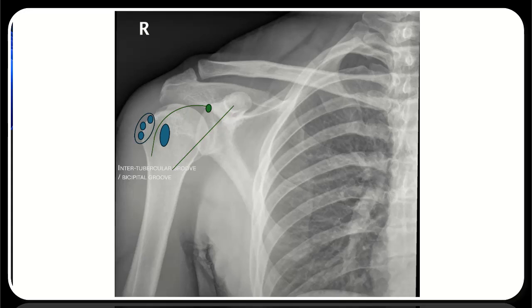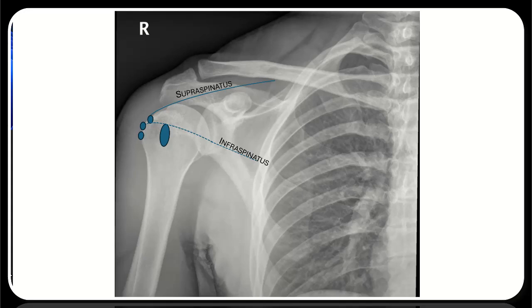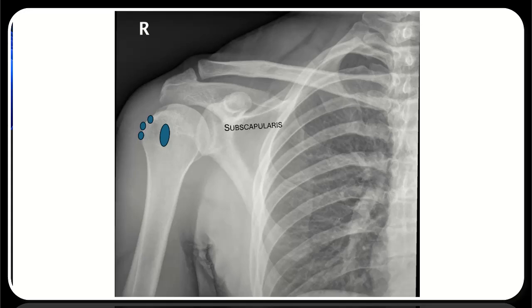The long head of the biceps is the only tendon in the body that is intracapsular, running through the capsule of the glenohumeral joint. Starting superiorly, supraspinatus starts from above the spine over the coracoid, underneath the acromion to attach to the superior border of the greater tuberosity. Infraspinatus, posteriorly under the spine, comes around the humeral head to the middle portion of the greater tuberosity. Teres minor also comes around posteriorly to the humeral head, attaching slightly inferior to the infraspinatus at the inferior border of the greater tuberosity. Finally, subscapularis is located anterior to the scapula, between the scapula and the ribs, and attaches to the lesser tuberosity or tubercle.